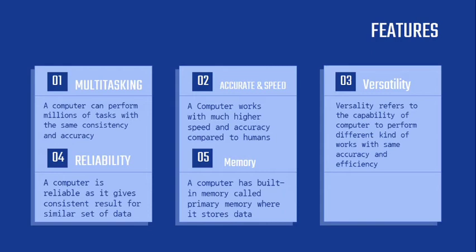Multitasking: a computer can perform millions of tasks with the same consistency and accuracy. Accurate and speed: a computer works with much higher speed and accuracy compared to humans. Versatility refers to the capability of a computer to perform different kinds of tasks with the same accuracy and efficiency. Reliability: a computer is reliable as it gives consistent results for a similar set of data. And the last is memory: a computer has built-in memory.